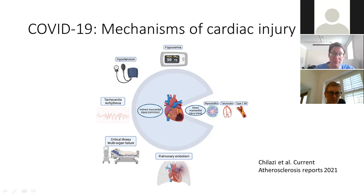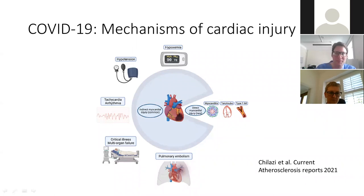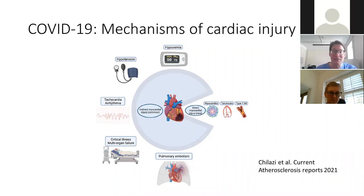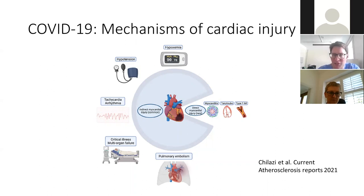In a minority of cases, people might also get a Takotsubo-type stress response if they are very unwell. Because COVID predisposes to thrombosis, like any severe infection, you're more likely to get a type 1 myocardial infarction. But probably that's a minority of cases. The vast majority of myocardial injury with acute COVID is secondary to things such as pulmonary embolism, critical illness, multi-organ failure, tachycardia, sympathetic nervous system activity, arrhythmias such as AF and non-sustained VT, hypotension, and hypoxemia.